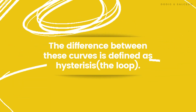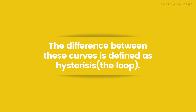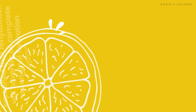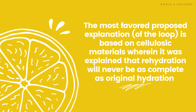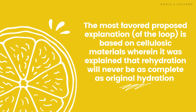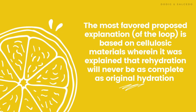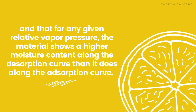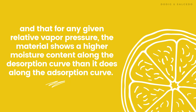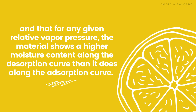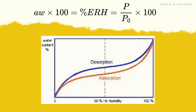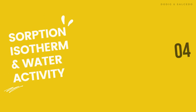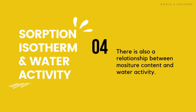The difference between these curves is defined as hysteresis, or the loop from the graph. The most favored proposed explanation is based on cellulosic materials, wherein it was explained that rehydration will never be as complete as original hydration, and that for any given relative vapor pressure, the material shows a higher moisture content along the desorption curve than it does along the adsorption curve. The graph first shown was the sorption behavior in relation to relative humidity, but it can also be expressed in terms of water activity, since there is also a relationship between moisture content and water activity.